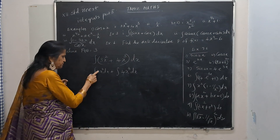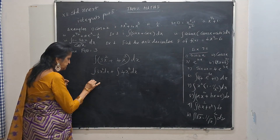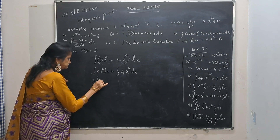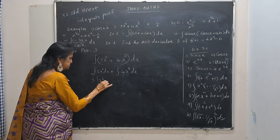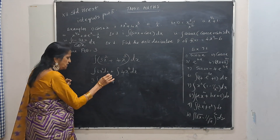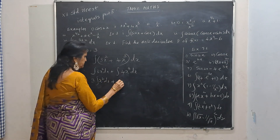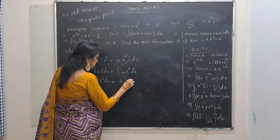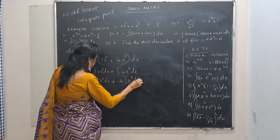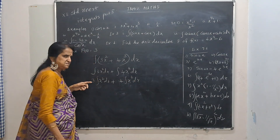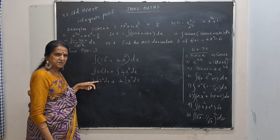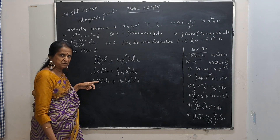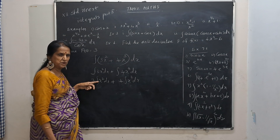3 is a multiplicative constant — it can be taken out. Then integral of x squared dx. 4 is a multiplicative constant — it can be taken out. Then integral of x cubed dx. Using the formula, integral of x to the power n equals x to the power n+1 divided by n+1.